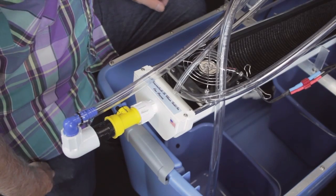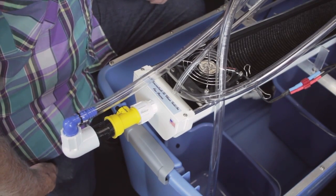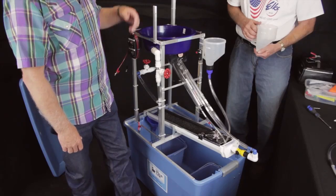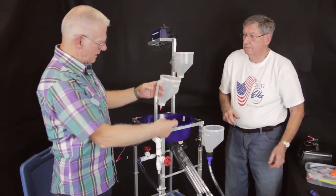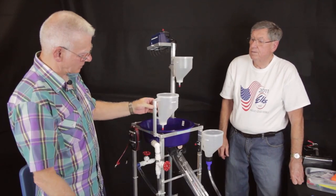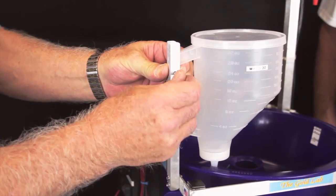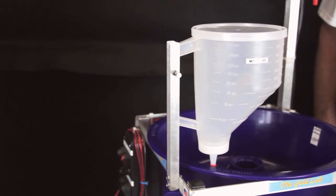The last hopper would be our 30 mesh hopper, and this is for feeding our main vortex bowl with our 30 mesh concentrate. It goes on there just like that with yet another pin right there to simply hold that in. And that's the hopper system.